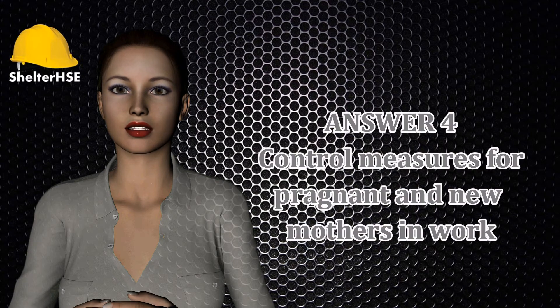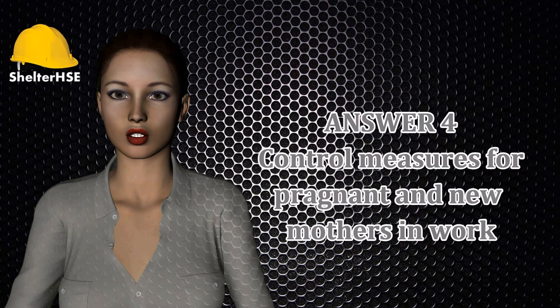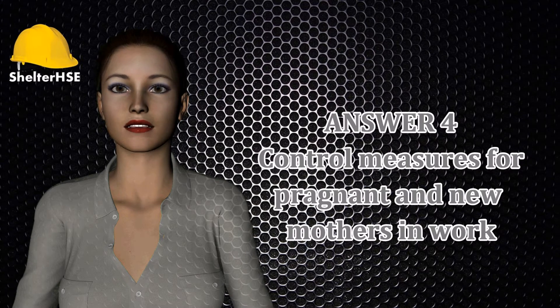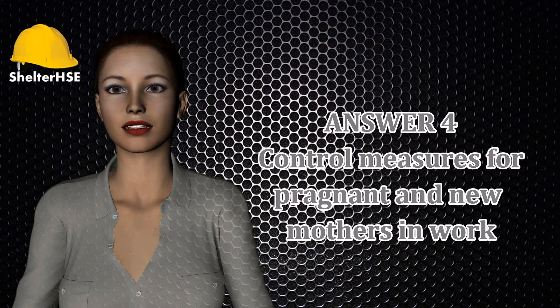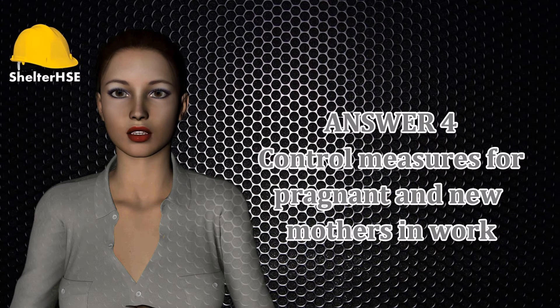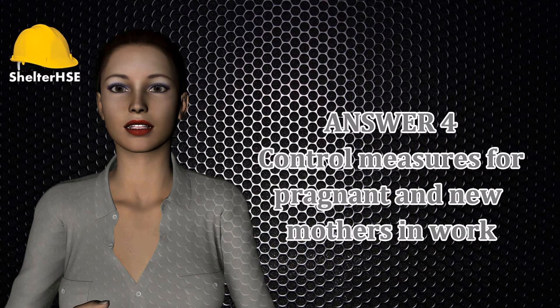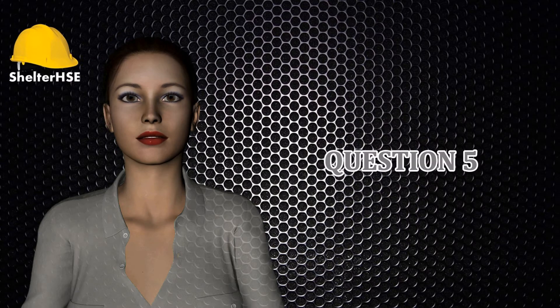Question four: Outline the actions that an employer may take when a risk to a new or expectant mother cannot be avoided. Working conditions or hours must be altered; an adaptation of her conditions of work. If the above is not feasible, a transfer to another post without loss of pay. When such a transfer is not feasible, paid leave in accordance with national laws, regulations or practice.